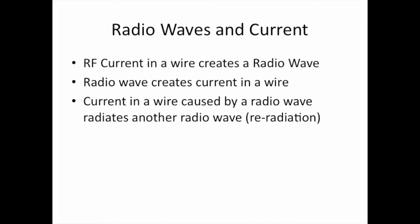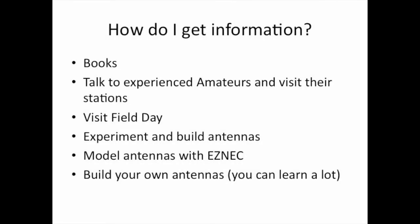There are a few things we need to understand about radio waves. RF current in a wire creates a radio wave, and a radio wave creates current in a wire. When transmitting, you put RF current into a wire to create a radio wave. When receiving, a radio wave passes over the wire and causes current to flow — and that current caused by a radio wave will radiate another radio wave, called re-radiation.